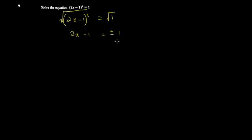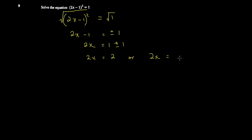So you get plus or minus 1. Then 2x is equal to 1 plus or minus 1. So 2x equals 1 plus 1, giving you 2, or 2x equals 1 minus 1, giving you 0. So x equals 1 or x equals 0. This is one way to go about it.